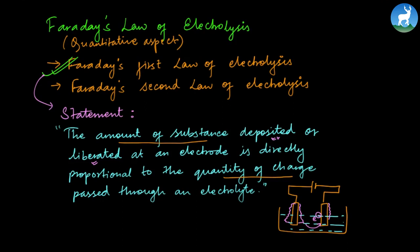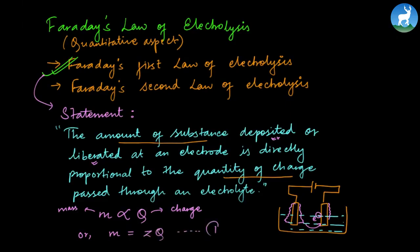The mass of substance m is directly proportional to the quantity of charge Q. Removing the proportionality sign and introducing a constant, we get the equation: M equals ZQ, where Z is the proportionality constant known as the electrochemical equivalent.